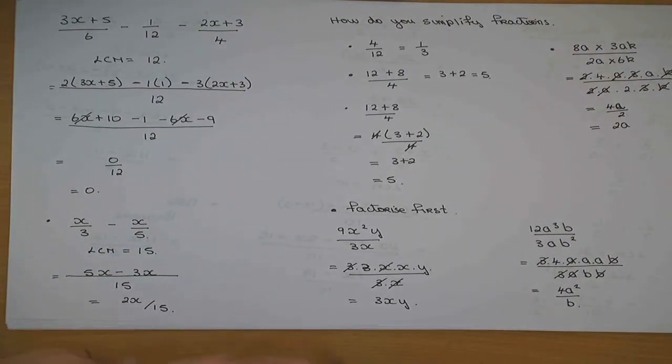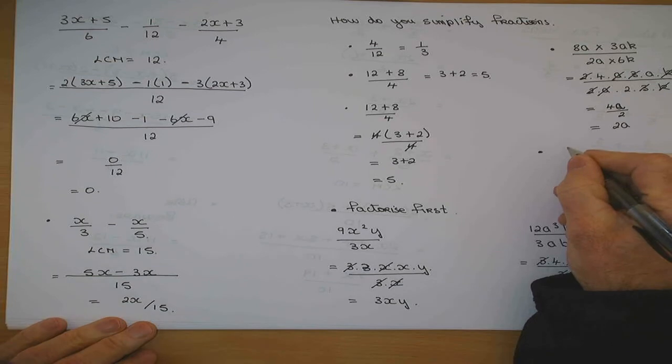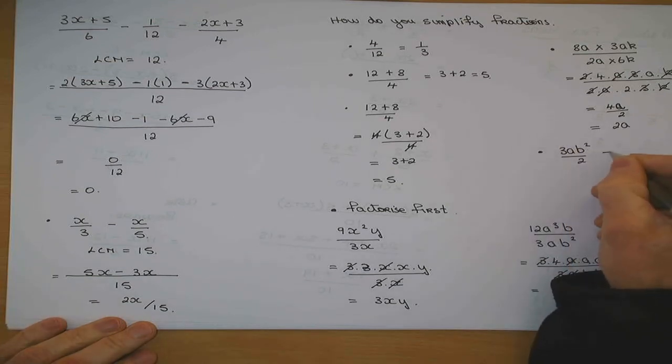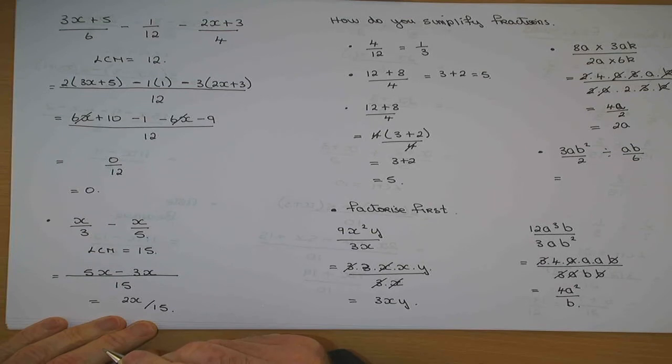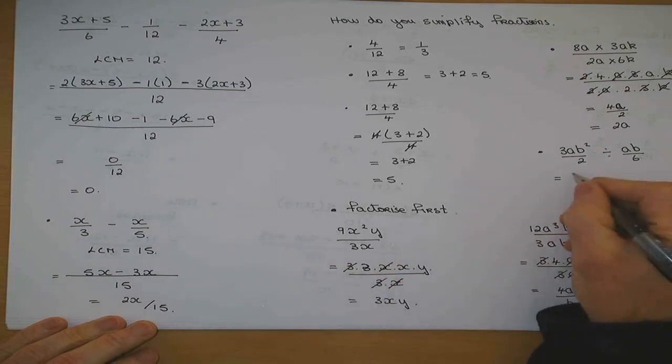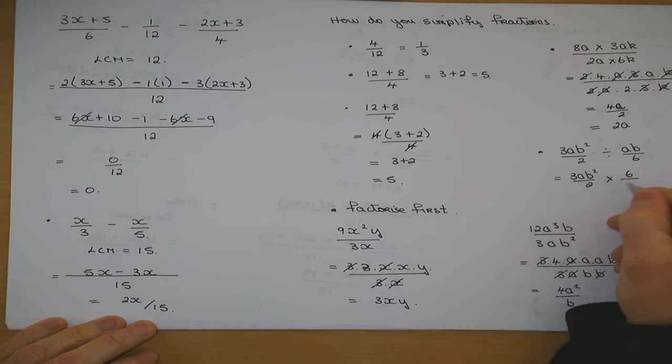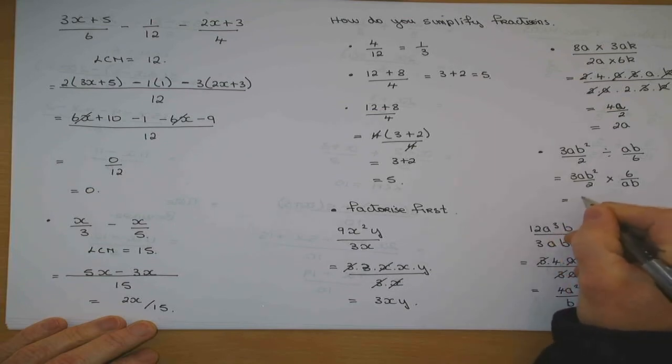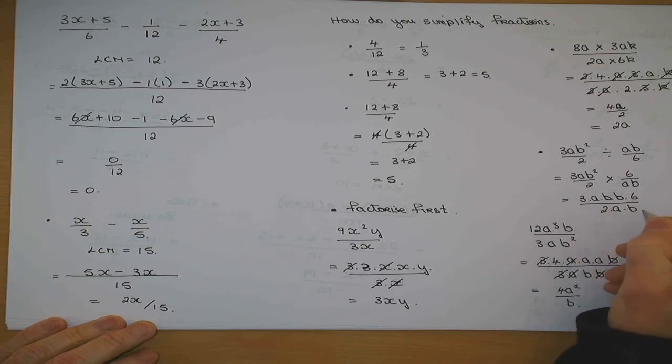Have you any questions? And one last one, 3ab squared over 2 divided by ab over 6. How do you divide by a fraction? You invert and multiply. So that's like 3ab squared over 2 multiplied by 6 over ab. 3 by a by b by b by 6 over 2 by a by b. And then you can cancel out, 2 goes into 6, and left with 9b.